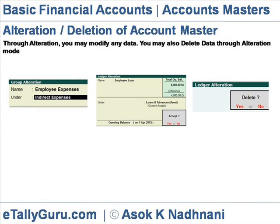Alteration and Deletion of Account Master. Through alteration you may modify any data. You may also delete data through alteration mode. To alter or delete an account group, at Gateway of Tally, select Accounts Info > Group > Alter and select the desired account group to be altered.